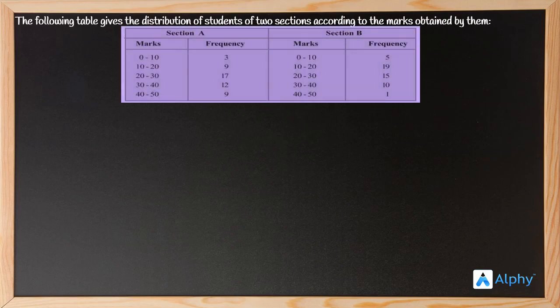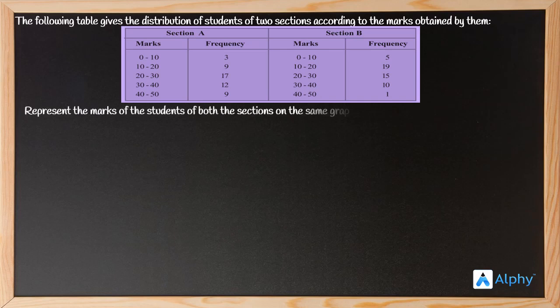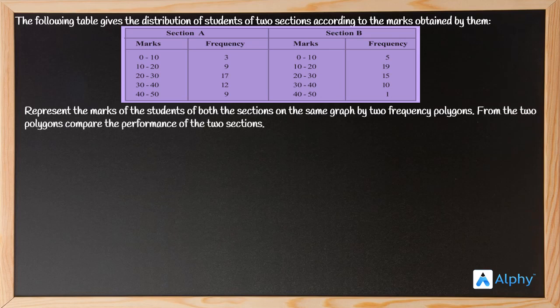Let us see some examples on frequency polygon. The following table gives the distribution of students of two sections of a class according to the marks obtained by them. This table consists of the marks of students of two sections in a particular test, where each section has their marks and the frequencies of number of students. We need to represent the marks of students of both sections using frequency polygon graphs.